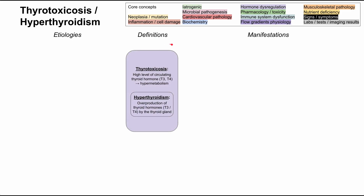Let's get started with the definitions. Thyrotoxicosis is a state of high circulating thyroid hormone — high T3 and/or high T4 in your blood — and this results in hypermetabolism. This encompasses hyperthyroidism, which is when you have an overproduction of thyroid hormones, T3 and/or T4, by the thyroid gland. It's important to note that hyperthyroidism is a type of thyrotoxicosis, but there are other types of thyrotoxicosis that are not necessarily hyperthyroidism.